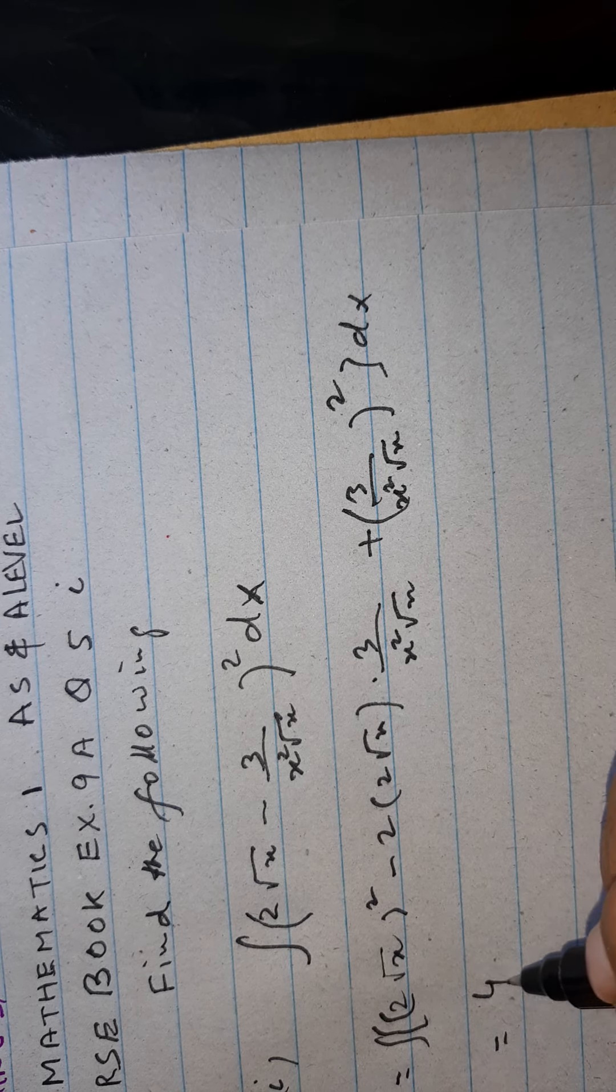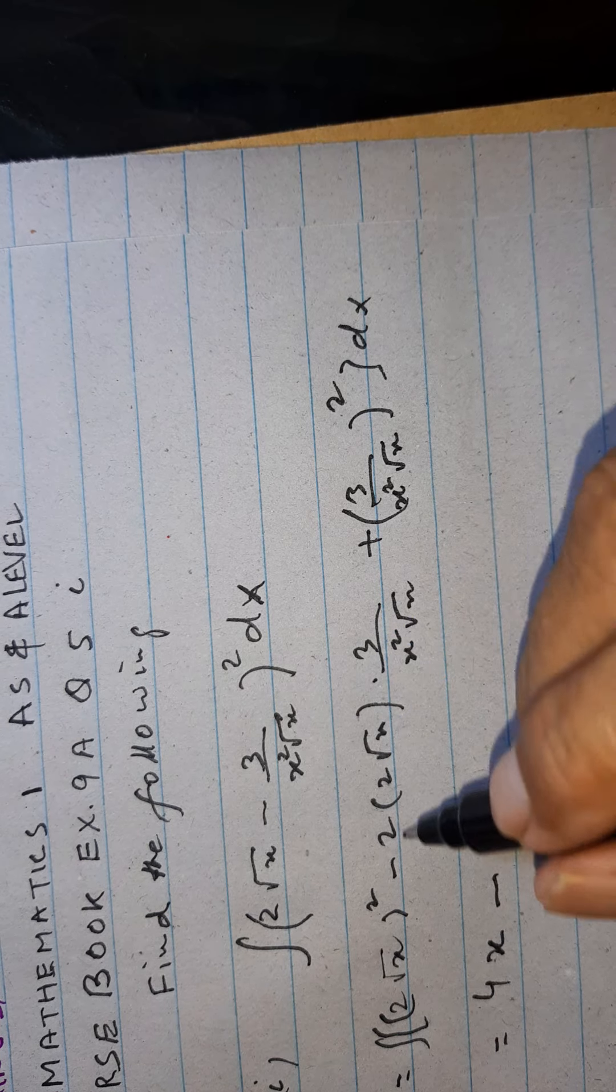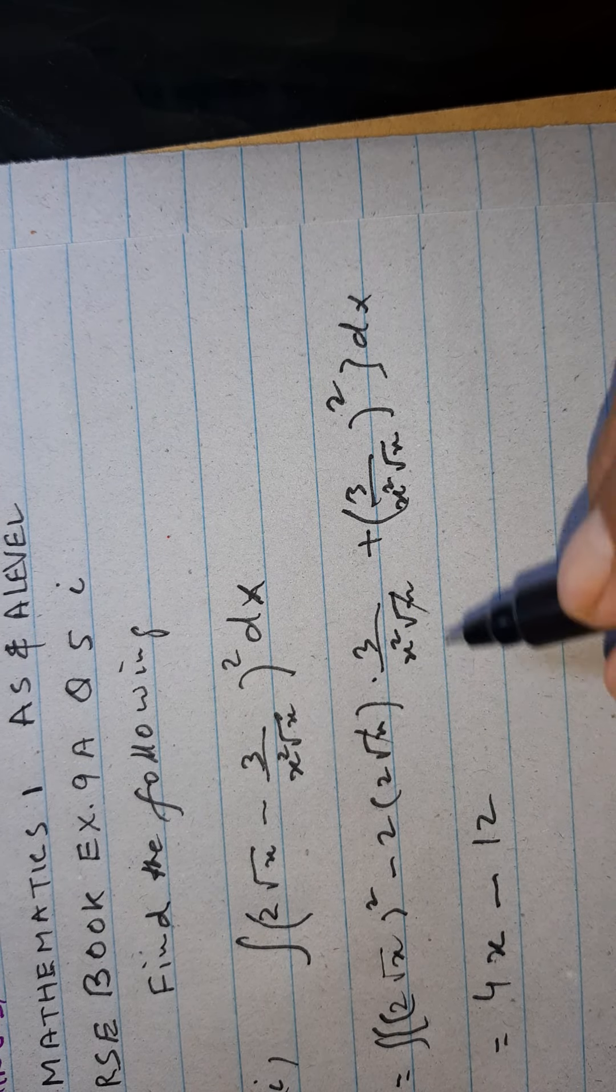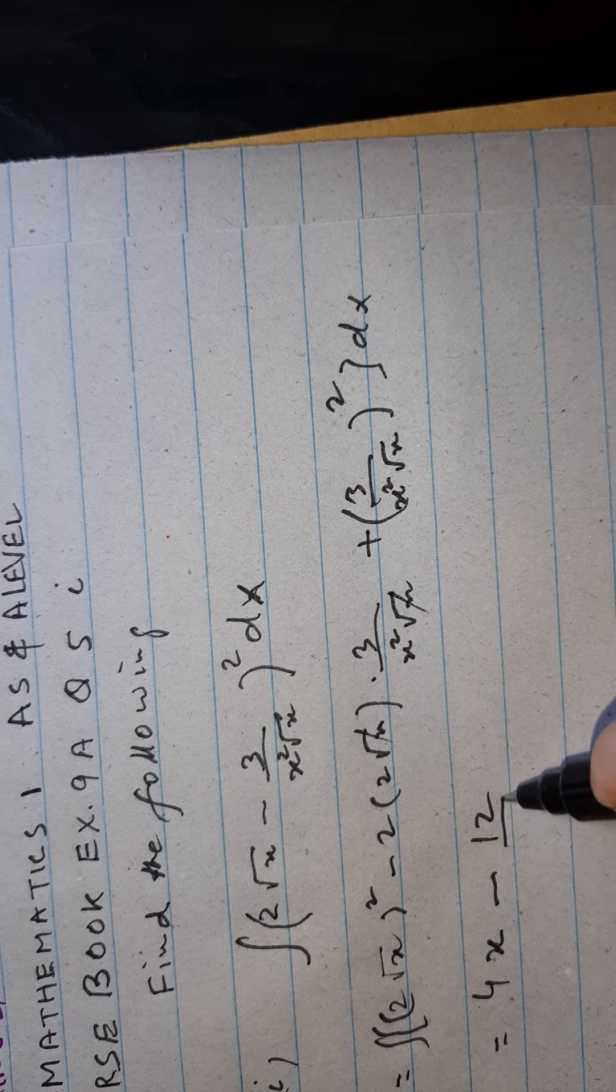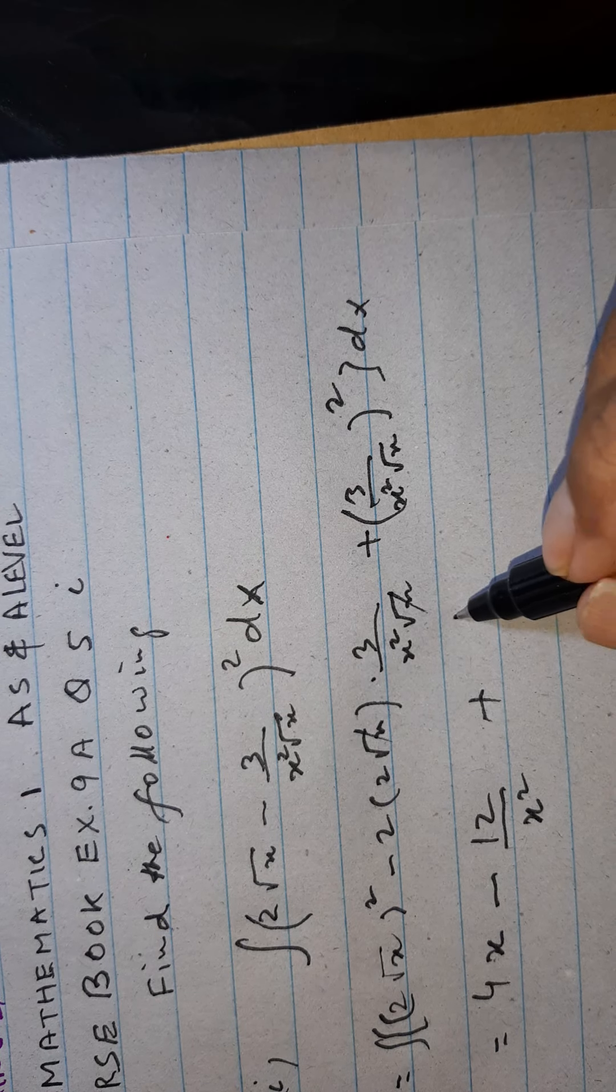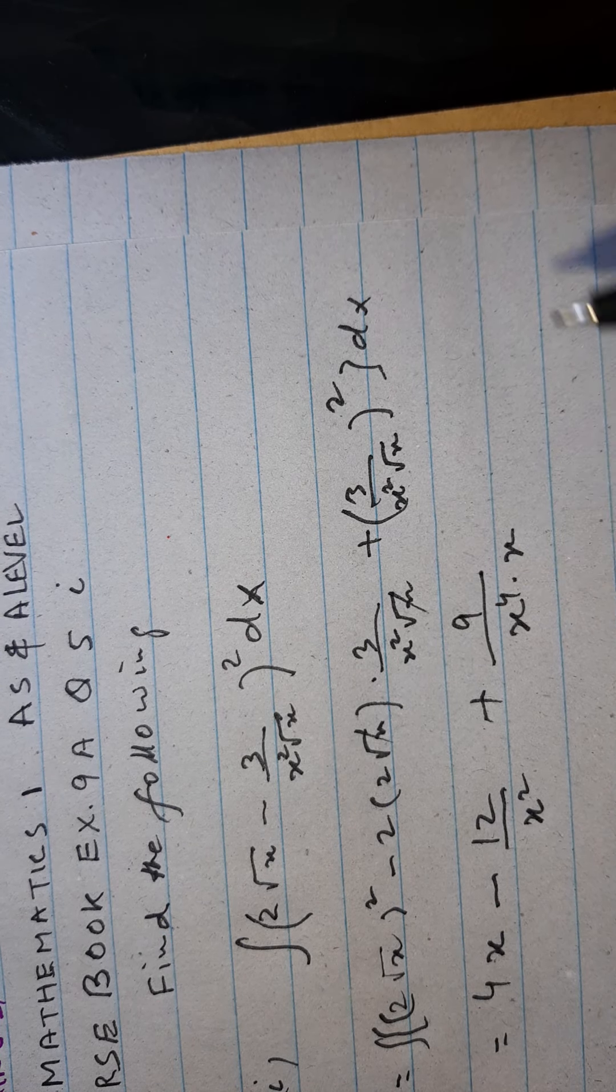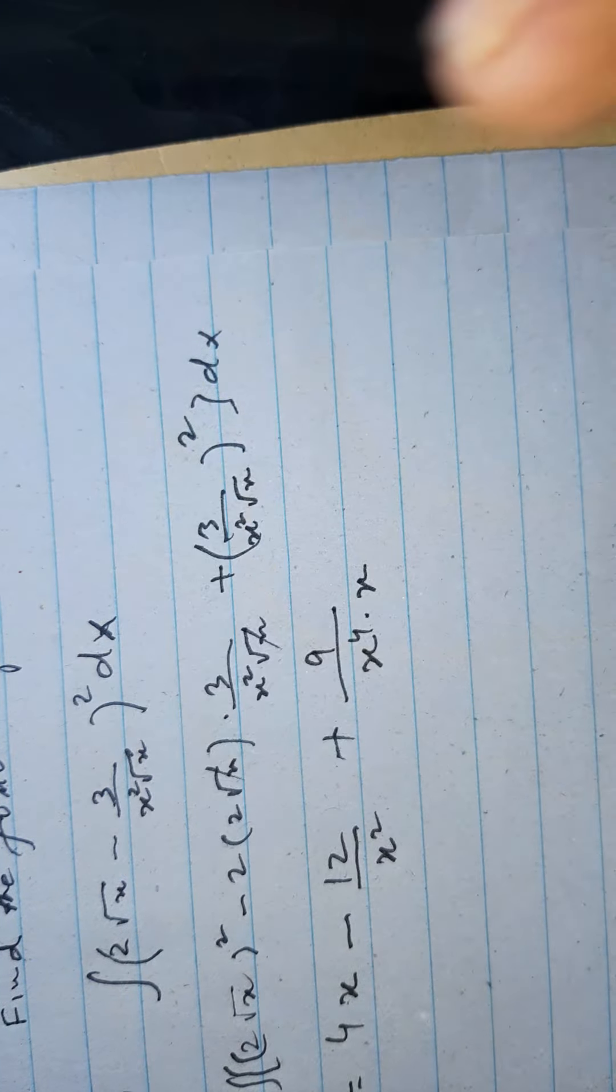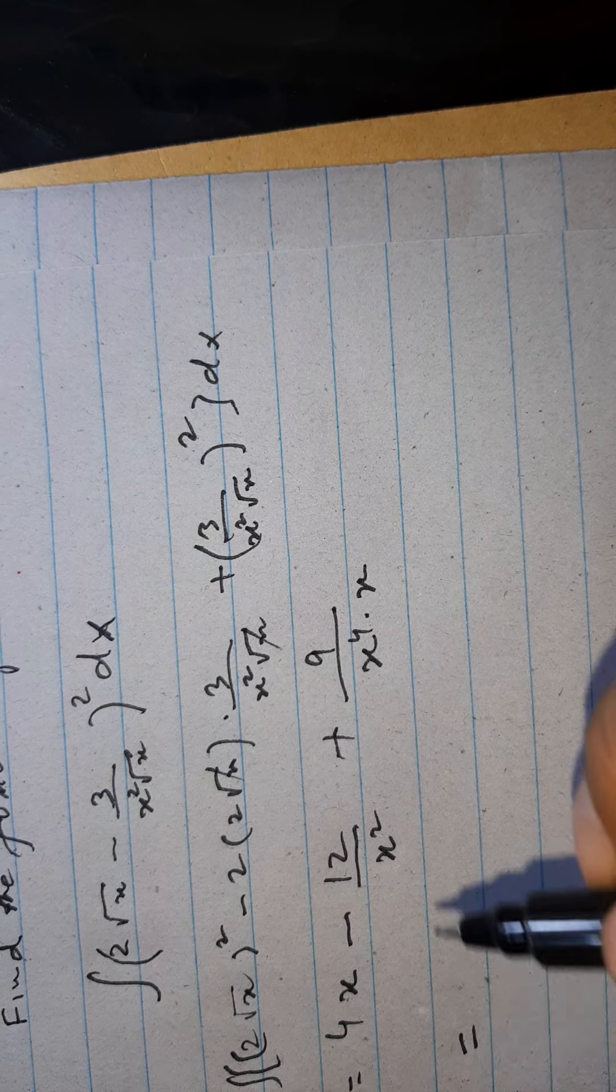This will be 4x minus 3 to the 6 to the 12, this will be cancelled. X square, and this will be 9 x power 4 into x.